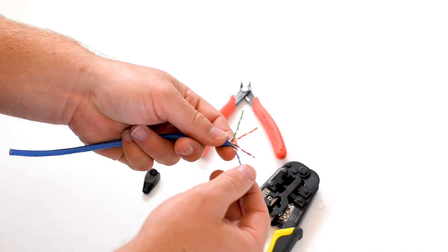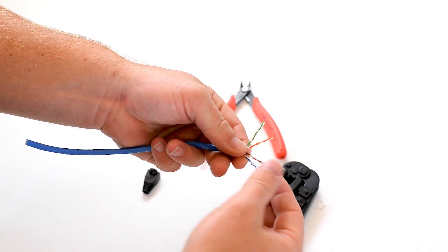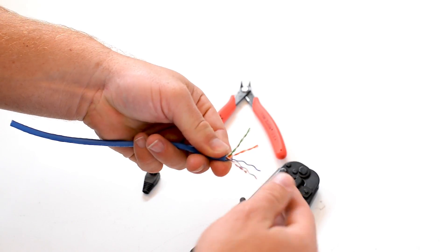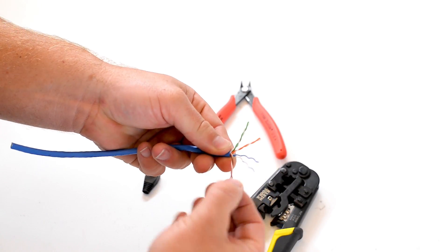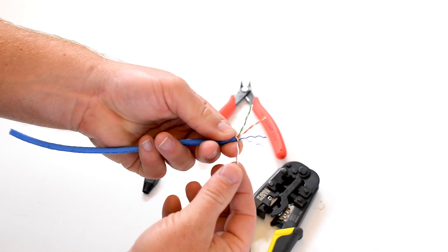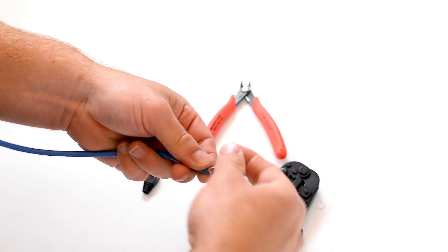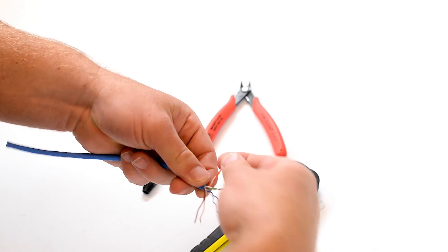So now I am going to start untwisting each of these pairs. Now while I am untwisting these pairs, I am going to start to look at the order of the wires as I untwist them. When you are crimping any kind of network cable, the order of the wire is very, very critical.